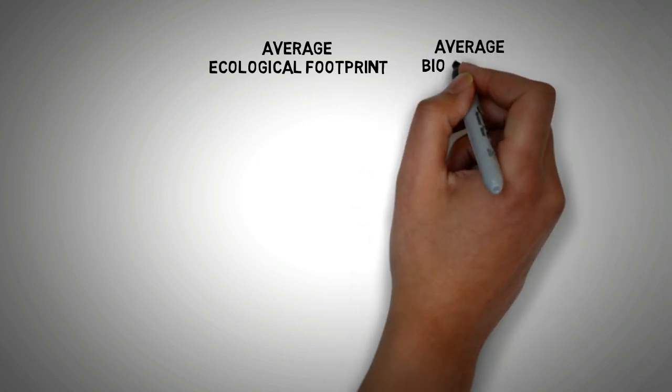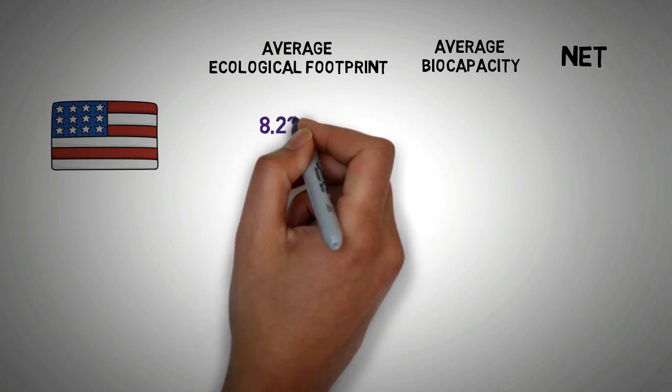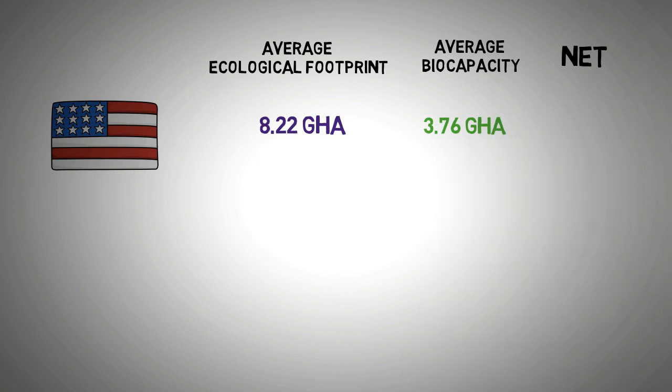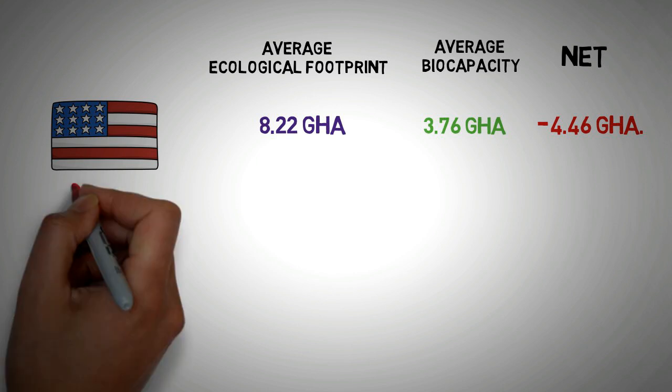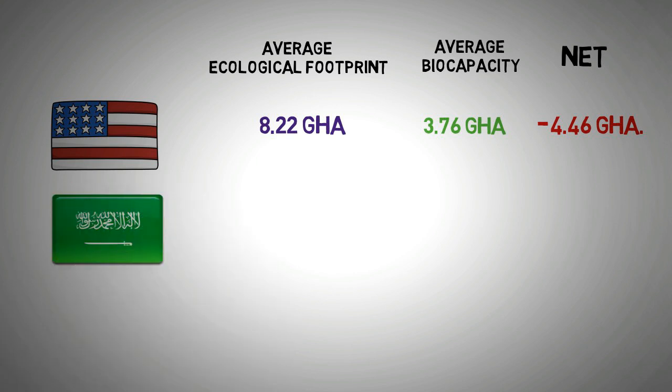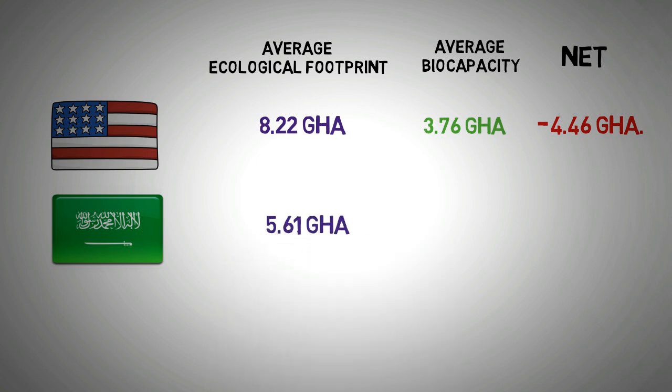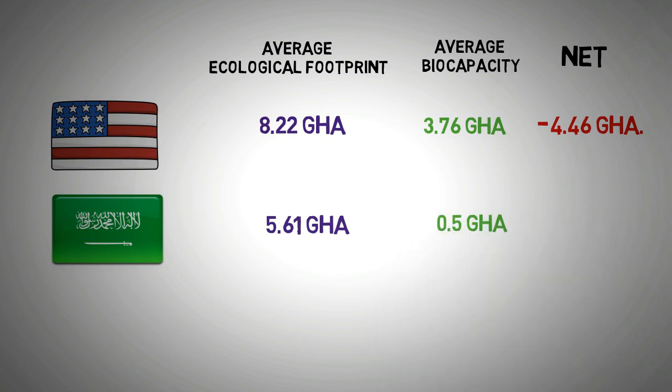For example, the per capita footprint in the US is 8.22 global hectares while the bio-capacity for US is 3.76, meaning every person in the US has an ecological debt of 4.46 global hectares. In Saudi Arabia, the footprint per capita is lower than the US at 5.61 global hectares. However, the bio-capacity is even lower because most of Saudi Arabia is desert. The bio-capacity is only 0.5 global hectares. So compared to the US, the per capita debt in Saudi is 5.12 global hectares.